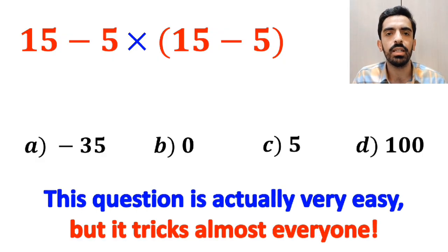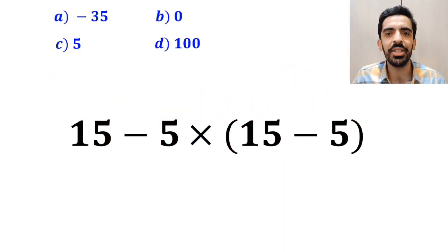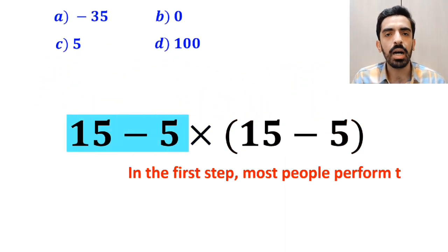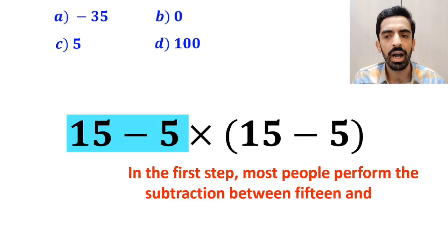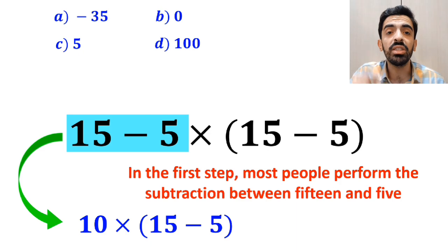Let's dive in and crush it together. In the first step most people perform the subtraction between 15 and 5 which I have highlighted in blue. So this expression simplifies to 10 multiplied by 15 minus 5 inside the parenthesis.